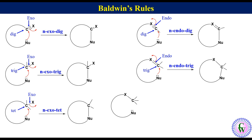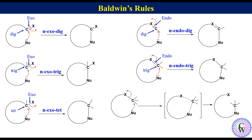For the last reaction type, the intramolecular reaction leads to the formation of a cyclic transition state which collapses to a cyclic product. Since the bond being broken is endo and the electrophilic center is tetrahedral, this reaction is named N-endotet.